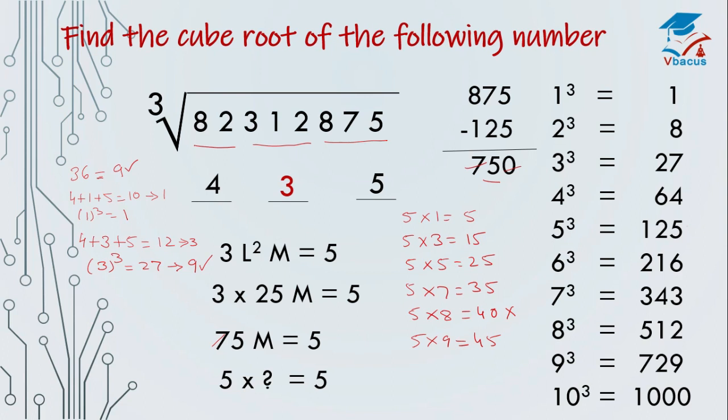So cube root of 82312875 is 435. Again, you can check in the calculator.